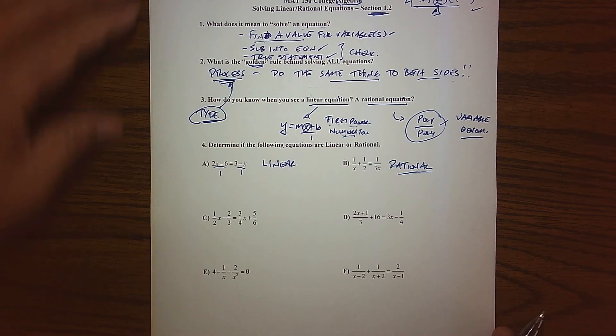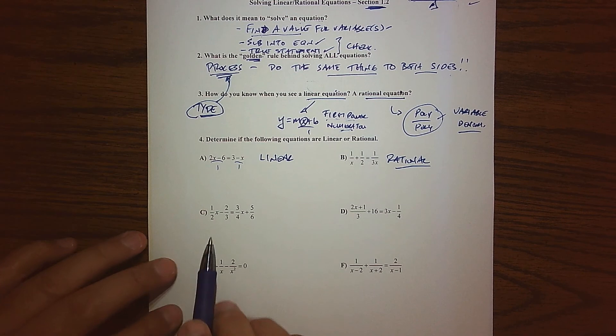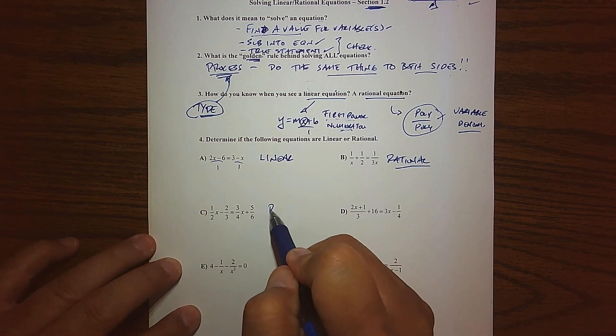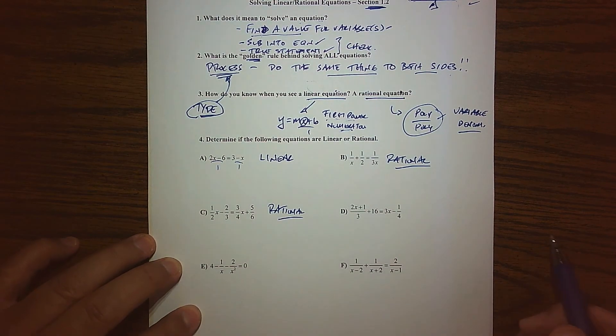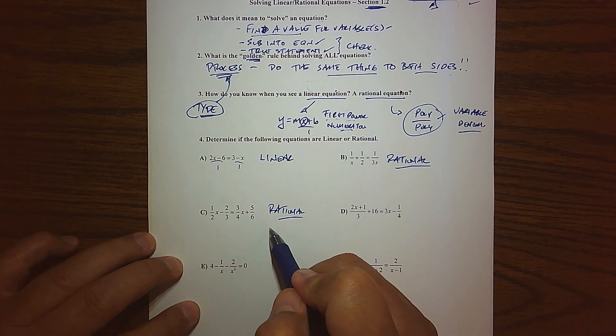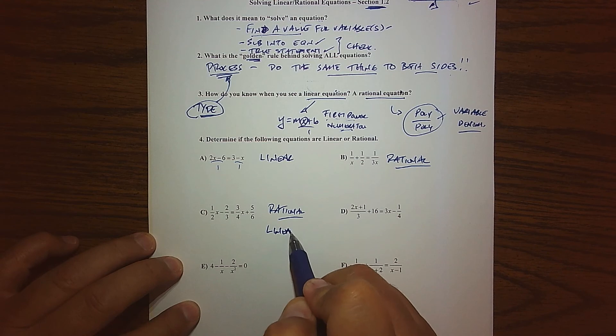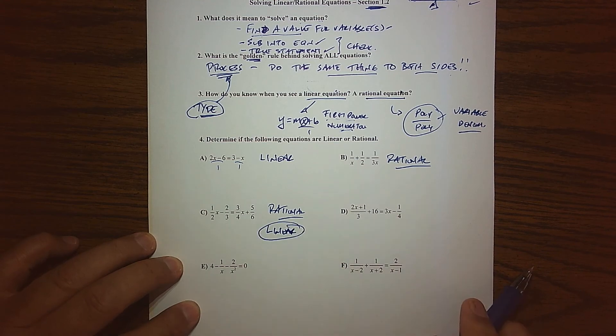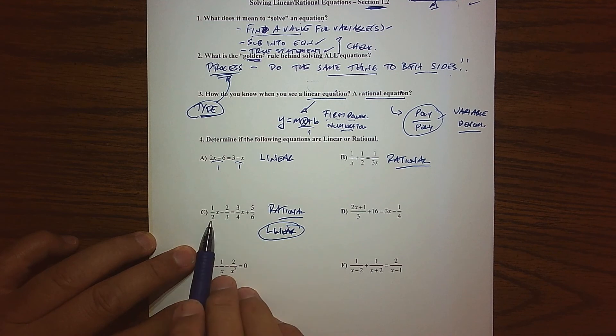Looking at letter C, what I do see are fractions. So you might want to call this a rational equation, which you probably could. But technically, the more correct answer here is it is, in fact, linear. Because, again, it just happens to be that the coefficients are fractions. If you take a look at your variable, we have mx plus b, mx plus b.